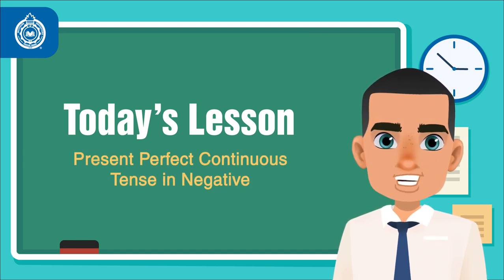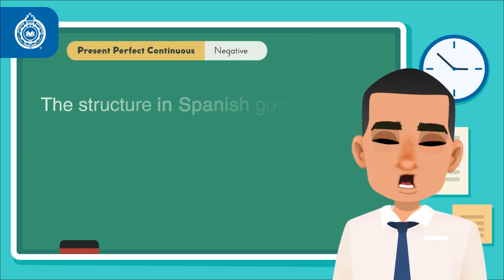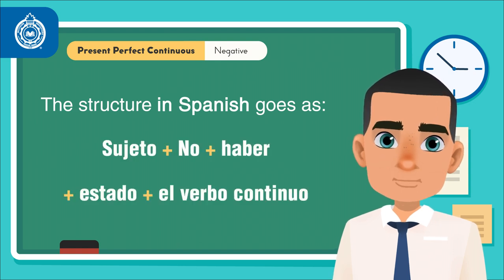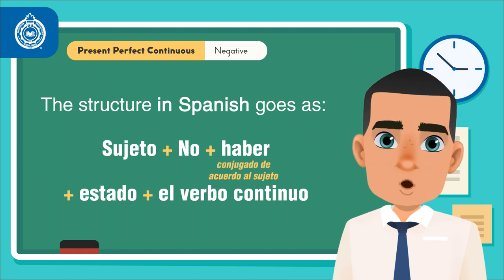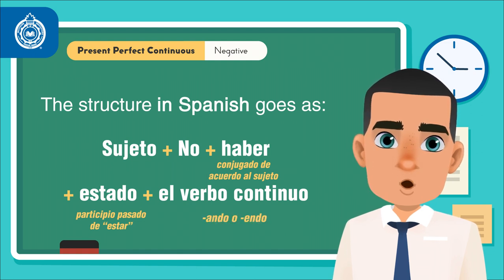You have previously seen the present perfect tense in affirmative sentences. Now the structure in Spanish goes as: sujeto, más no, más haber conjugado de acuerdo con el sujeto, más estado, el participio pasado de estar, más el verbo continuo, -ando, -endo.